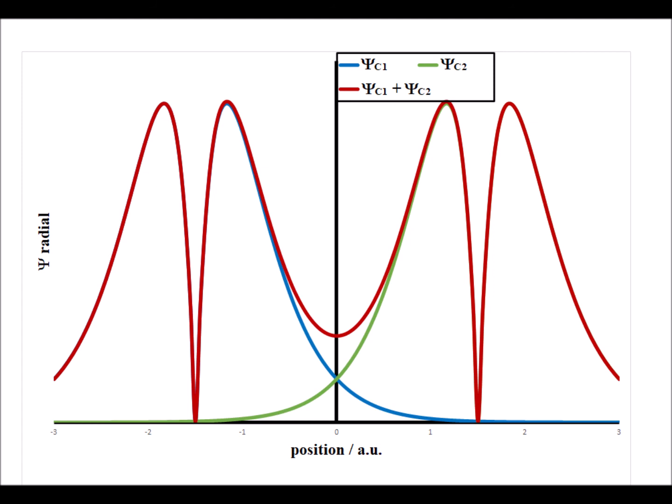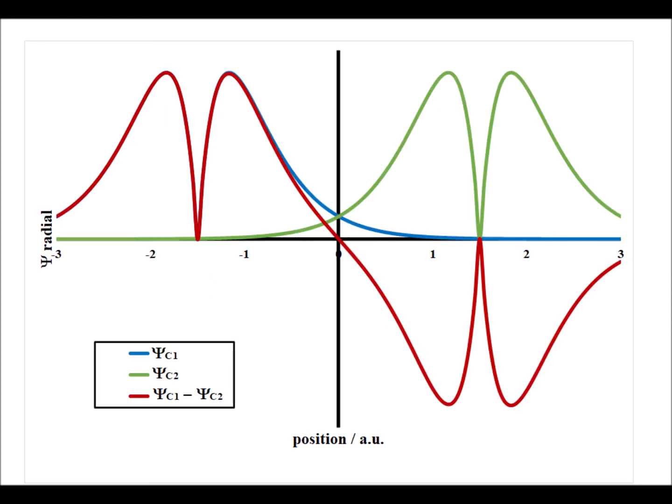Our final combination is the sigma bonding combination between two p orbitals on two neighboring carbon atoms. This is equivalent to px with px along the axis making the bonding combination, which is shown in red. The atomic orbitals are shown in blue and green, and the antibonding sigma combination is shown in red for two p orbitals on carbon atoms centered at minus 1.5 and plus 1.5.